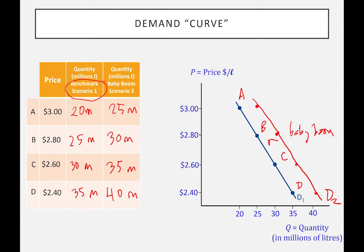You can see that in this case the demand curve shifts to the right. So: if I lower the price, I'm just moving along the same curve. But if I change some other factor — something other than the price, like having many more kids — then the demand curve shifts to the right.